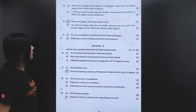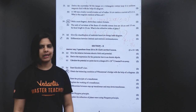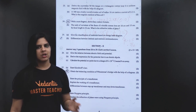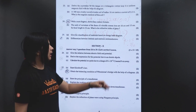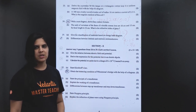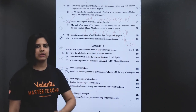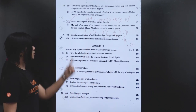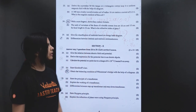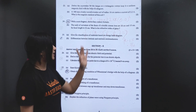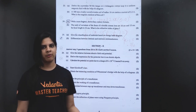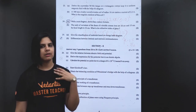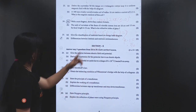Give classification of materials based on energy band diagram. We have two bands: conduction band and valence band, then forbidden energy gap. Differentiate between intrinsic and extrinsic semiconductors: a pure form of semiconductor versus an extrinsic one.